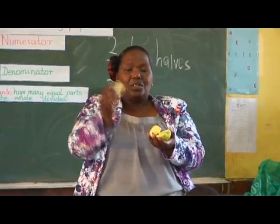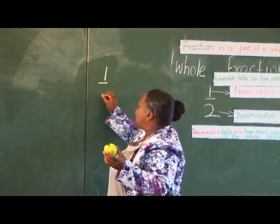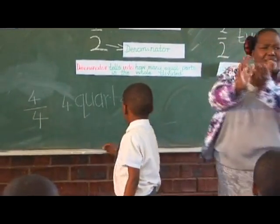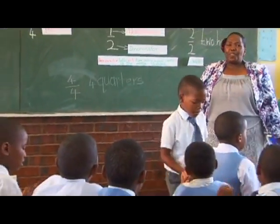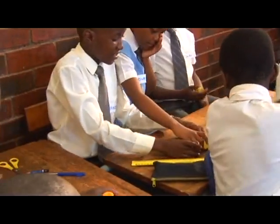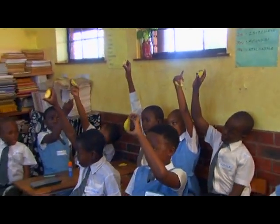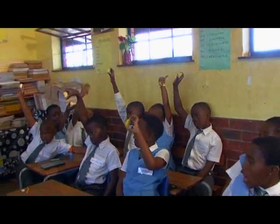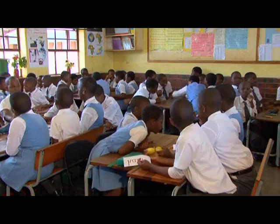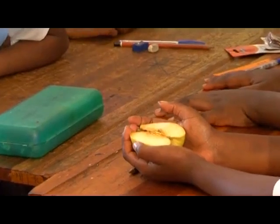Each half is cut into two. What fraction is this? I must write one as a numerator and four as a denominator. When we are doing common fractions, we are sharing equal parts. So when I am giving them the apple, I want them to share among themselves equally — to show the quarters, to show the eighths, to show the seeds, to show the parts. With this strip, they are in groups of five, six, and four. So they have to share equally so that they know how to divide.